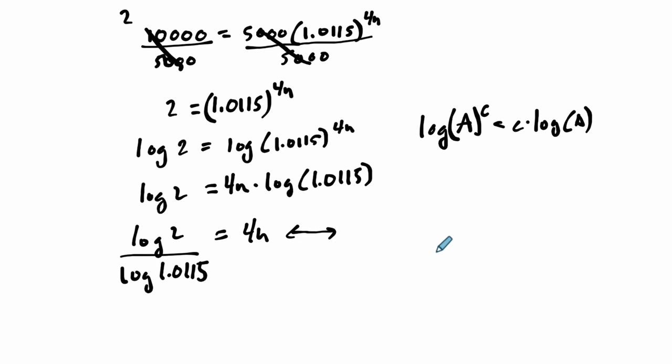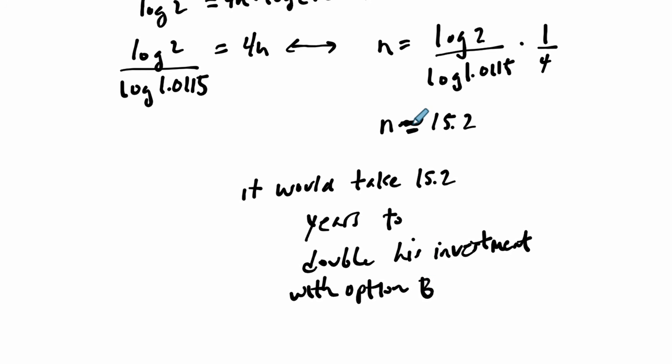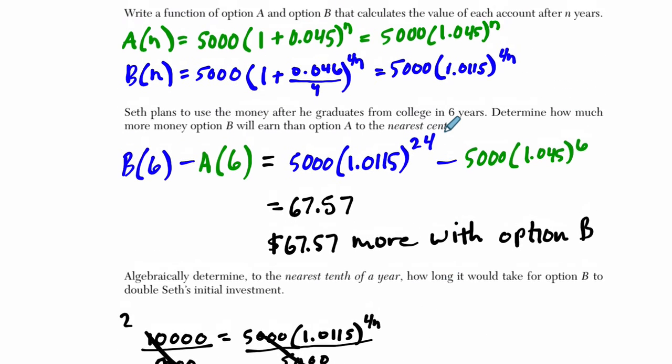And then finally, to solve for N, we would divide both sides by 4. So N is going to be equal to the log of 2 over the log of 1.0115, and I want to say times 1 fourth, the same thing as dividing by 4. And if you check your calculations here, we should get about, to the nearest tenth of a year, 15.2. So you can say it would take 15.2 years to double his investment with option B. I didn't show some of these calculations in the calculator, but make sure you're getting these numbers here. And that's what I would do to solve it algebraically. Alright, I hope that helped.